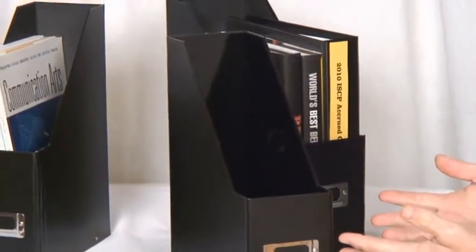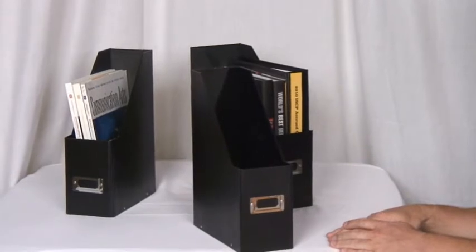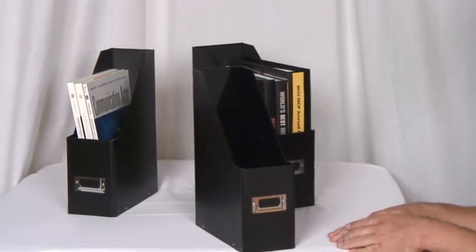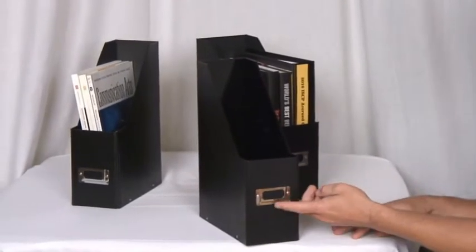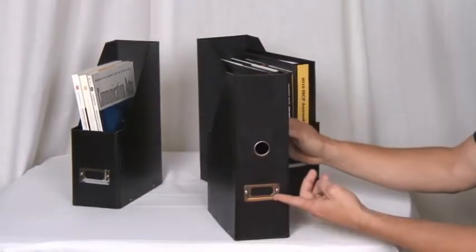There you have it—the perfectly constructed Snap-In-Store magazine file. You can see on the front it has chrome steel hardware for a label holder. It's got another label holder in the back in case you keep it that way.